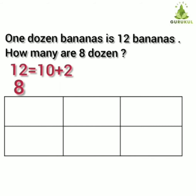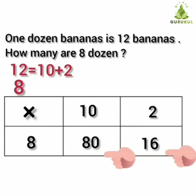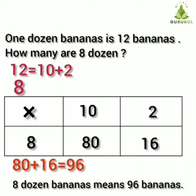Do proper framework. In the left hand side corner, compulsory put a multiplication sign. Write horizontally the first number, that is 12 in expanded form: 10 plus 2. Now write vertically your next number, that is 8. Start multiplication. Multiply 10 by 8 — 10 eights are 80. Multiply 2 by 8 — 2 eights are 16. Now add the product: 80 plus 16. Answer: 96. So 8 dozen bananas means 96 bananas.